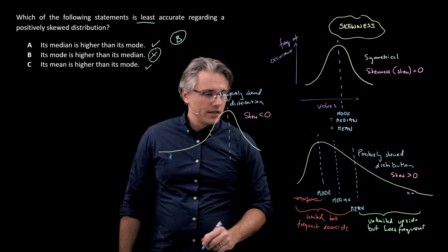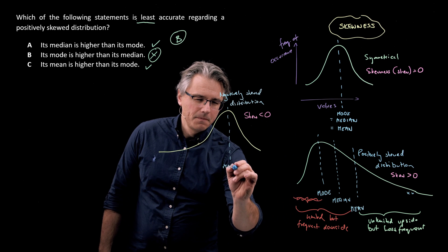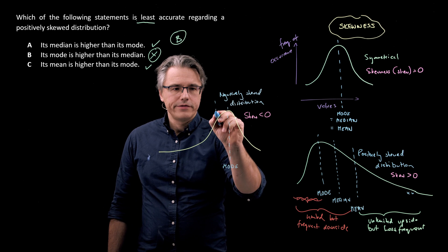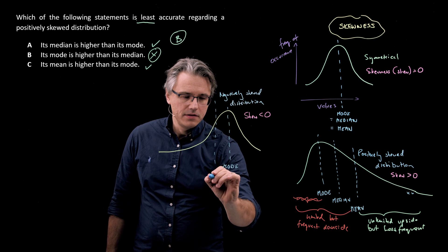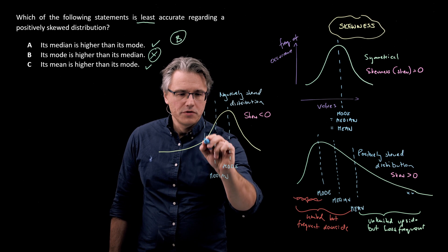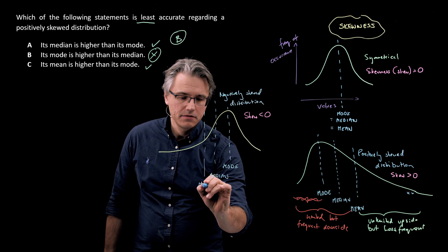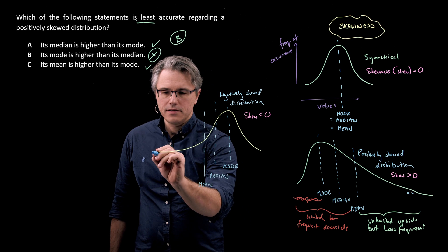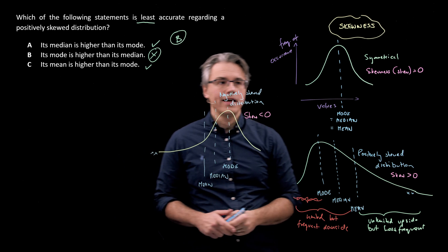This highest point here is the mode. And to the left of it we're going to have the median. And even more to the left, the mean, which as we know is significantly influenced by the outliers.